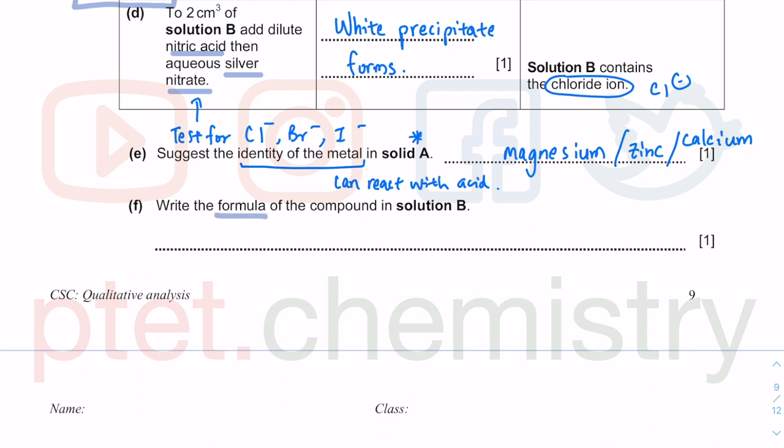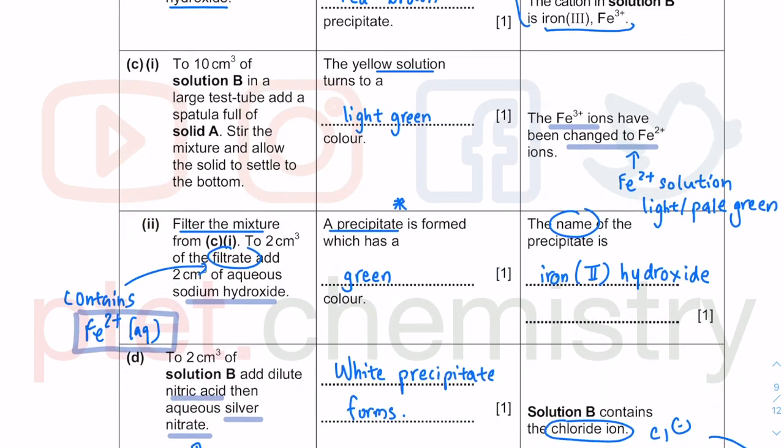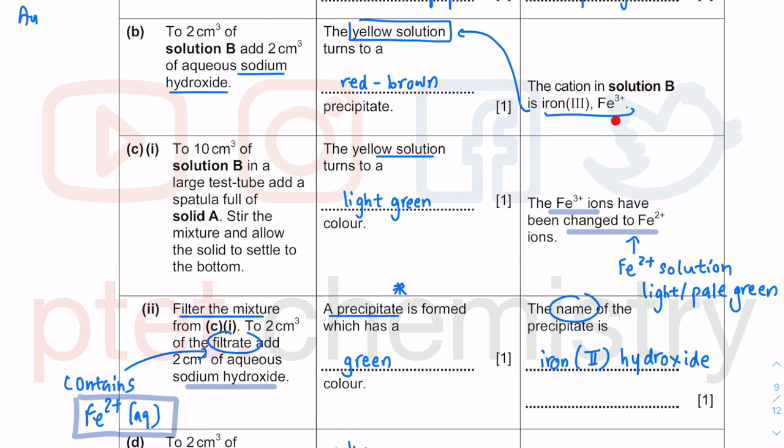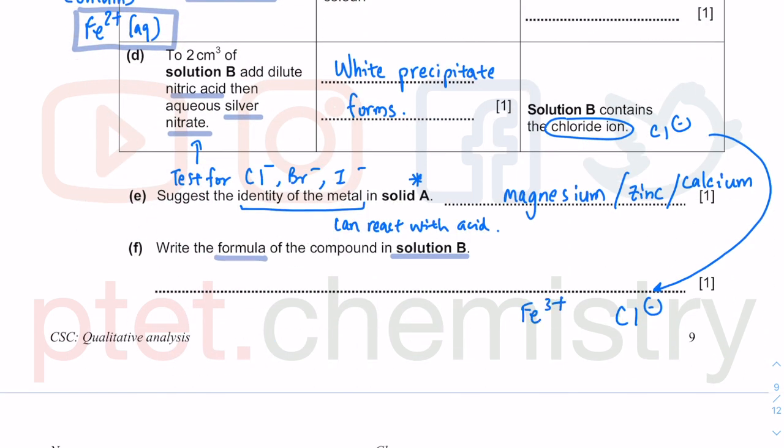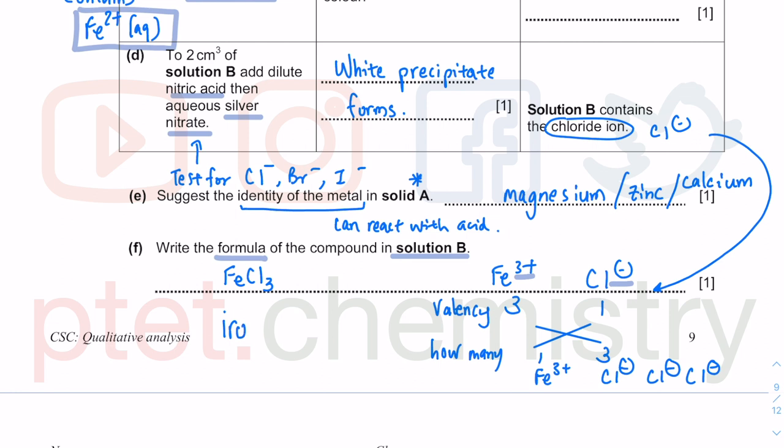Write the formula of the compound in solution B. Solution B contains chloride and iron 3 plus. You have Fe3+ and Cl-, 3 and 1 based on the valency. Do crisscross of the valency: 1 of the iron 3 plus, 3 of the Cl minus. Altogether, the formula is FeCl3. The name is iron(III) chloride. They want formula, not the name. If you give the name, you already lost the game.